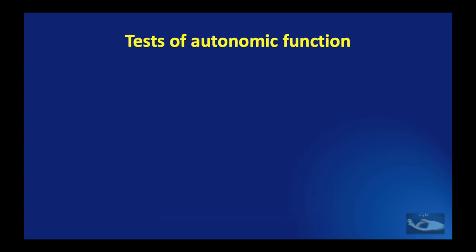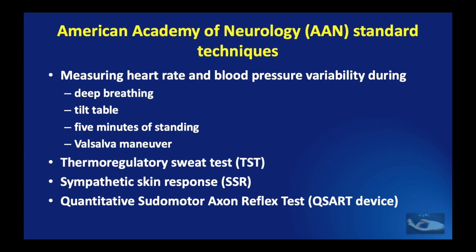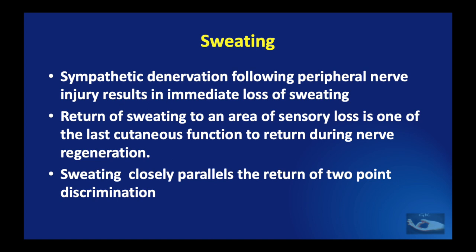Testing for autonomic function is appropriate for disorders like lepromatous leprosy, diabetic neuropathy, and progressive autonomic neuropathy. According to the American Academy of Neurology, standard autonomic testing techniques include measuring heart rate and blood pressure variability during deep breathing, the tilt table test, 5 minutes of standing, and the Valsalva maneuver, as well as the thermoregulatory sweat test, sympathetic skin response, and the quantitative sudomotor axon reflex test. Sympathetic denervation following peripheral nerve injury results in immediate loss of sweating, and return of sweating closely parallels the return of two-point discrimination.